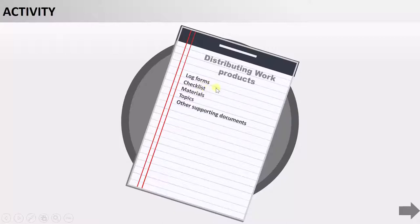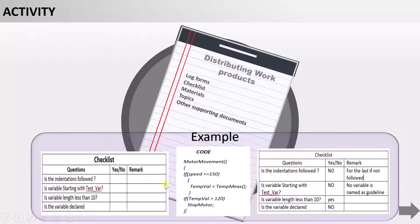This is how the checklist looks. The checklist contains certain questions like: Is the indentation followed? Is the variable starting with 'test_where'? — meaning whatever variable you use in your test case has to start with 'test_where', which tells us this is a test variable. Then: Is the variable length less than 10? And: Is the variable declared?